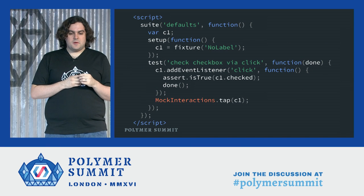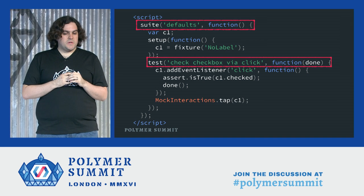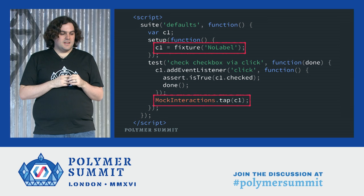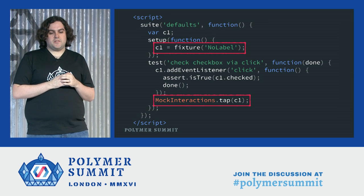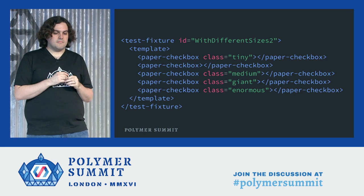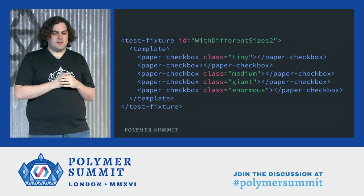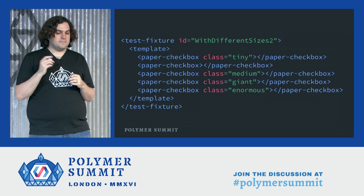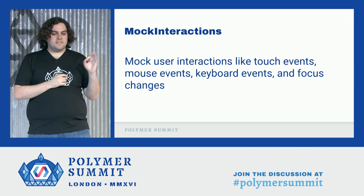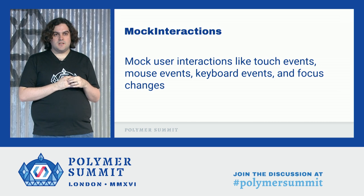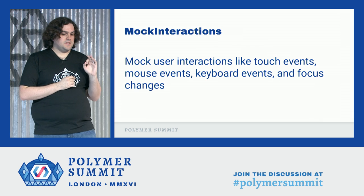Here is a little test from the paper checkbox suite. We have Mocha's suite and test functions, a Chai assertion with a checkbox being checked, and two parts that probably don't look very familiar — they're part of the testing helpers that we load with WCT. The first one, test fixture, is an element wrapper that integrates with Mocha suites to easily produce and remove testing elements from the document. You can put your testing markup inside a test fixture element to create the elements, test them, and automatically at the end of the test they'll be removed from the page. Mock interactions is another helper that lets you easily mock user input — mouse events, touch events, keyboard events, focus changes — for any test that requires user input to modify properties or fire an event.